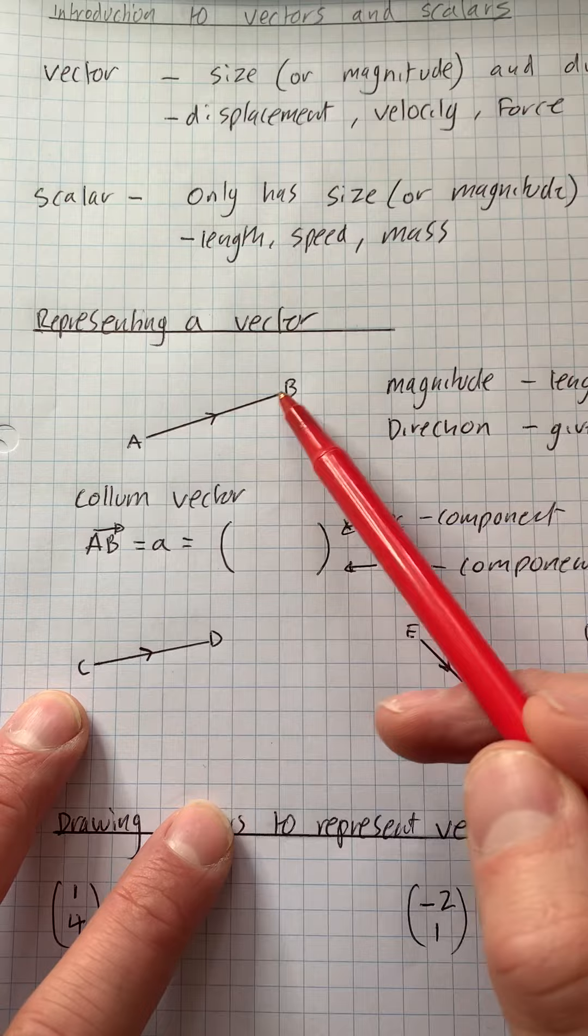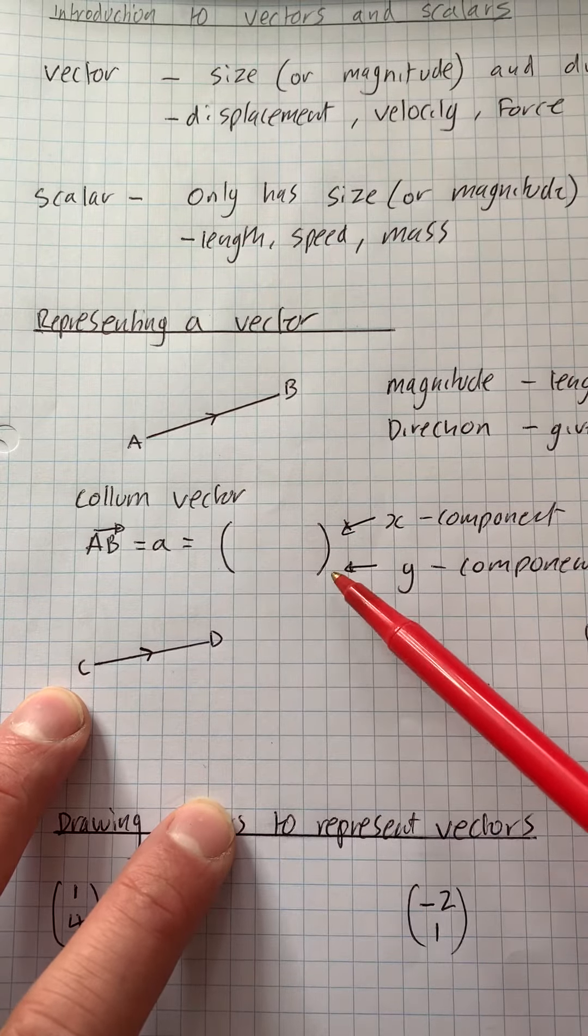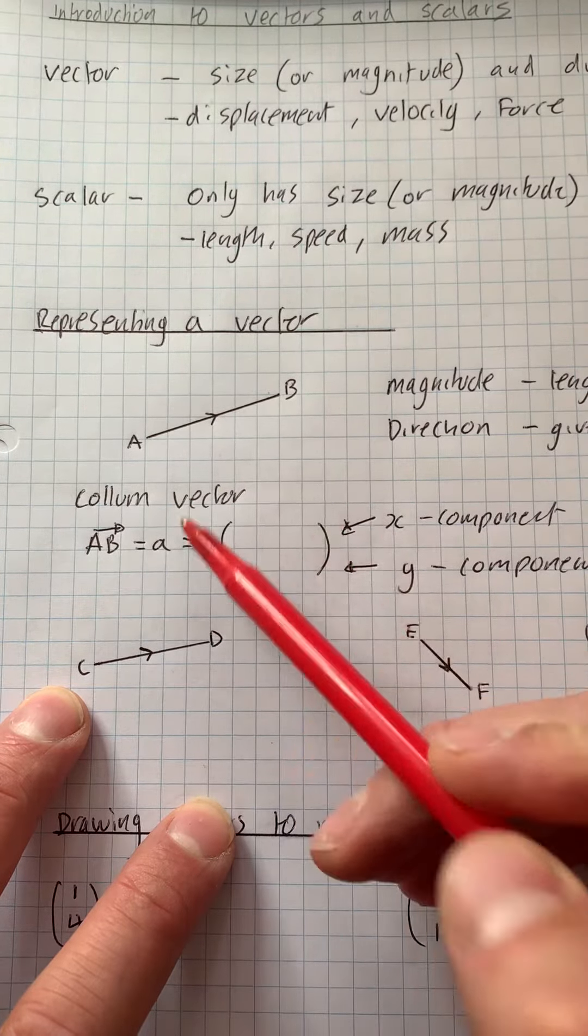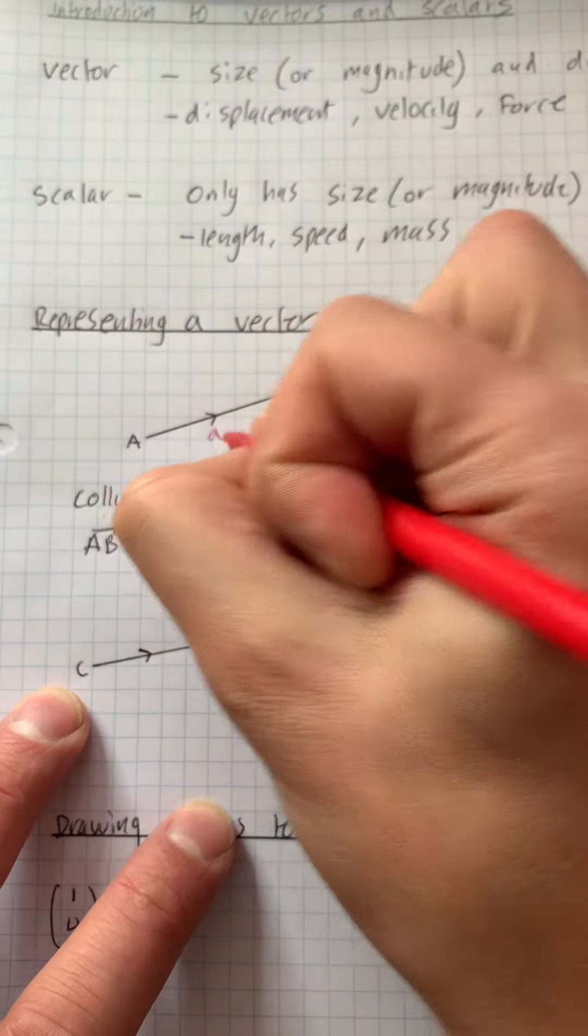And we can write this vector in what we call a column vector. So we can write AB, so the direction from A to B, or we can call it A.